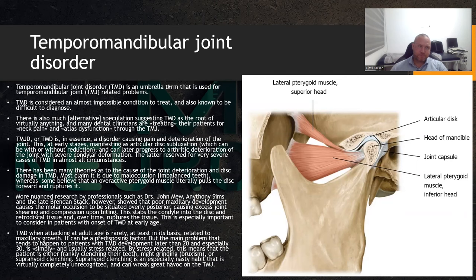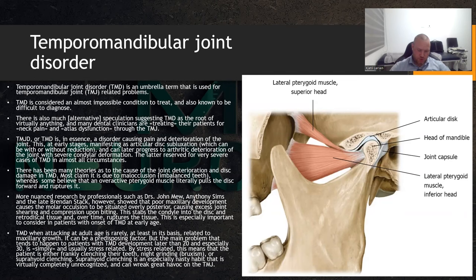TMD is an opinionated topic. There are some alternative practitioners who claim that TMD can cause all kinds of bodily maladies — that it will cause your spine to be crooked, your shoulders and hips to be uneven. There is some evidence done almost exclusively on rats or mice, where they induced malocclusion in these animals and it caused spinal scoliosis.